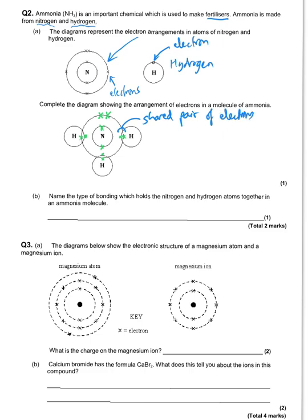Just to highlight what we're showing: this is a shared pair of electrons, and that's a covalent bond. We've got another shared pair and another shared pair here — these are all shared pairs of electrons. The pair at the top is not involved in bonding; that's called a lone pair of electrons. It's there and it's important to acknowledge nitrogen's got it, but we don't need it for the mark. Name the type of bonding: that's covalent — two non-metals bonded together, sharing pairs of electrons.